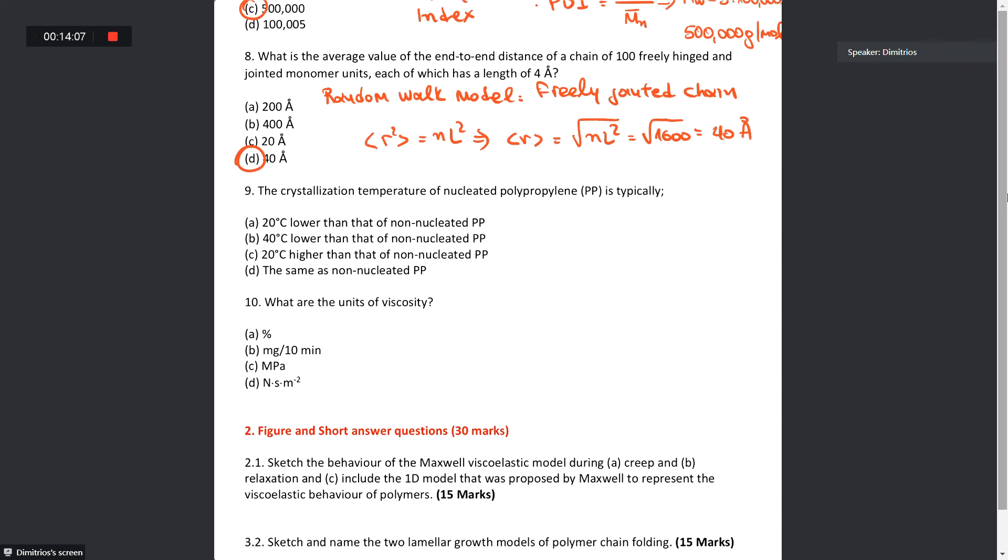Now, the crystallization temperature of nucleated polypropylene is typically 20 degrees higher than that of non-nucleated polypropylene. We said that we usually add nucleating agents in order to accelerate the crystallization process. And by accelerating the crystallization process, we make the polymer matrix crystallize at higher temperatures.